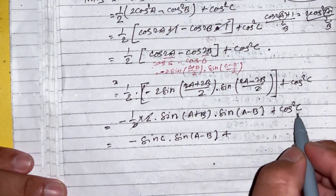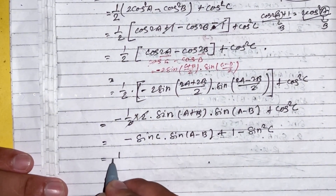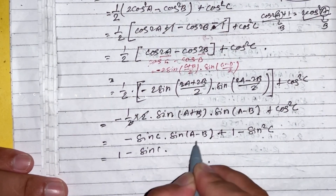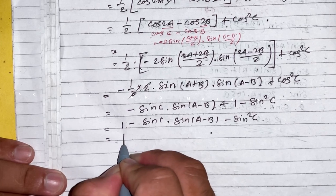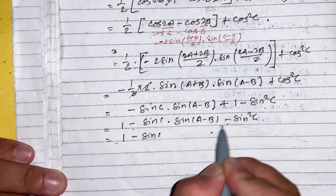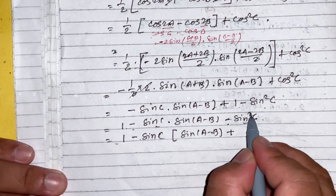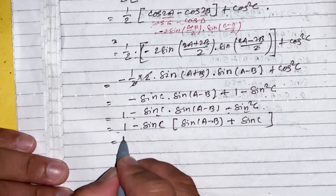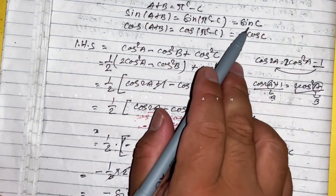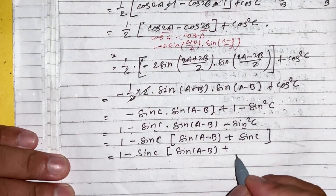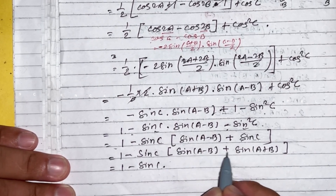This becomes 1 minus sin square c plus 1 minus sin c into sin(a minus b). Further expanding: 1 minus sin c times sin(a minus b) plus sin c times sin(a plus b), which equals 1 minus sin c times [sin(a minus b) minus sin(a plus b)].